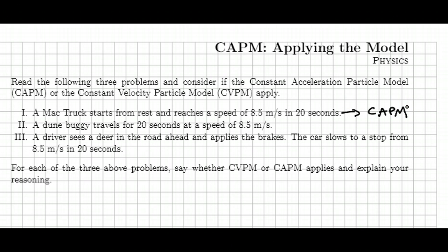In the second one, the dune buggy travels for 20 seconds at a speed of 8.5 meters per second. It sounds like that speed doesn't change, and if the direction also doesn't change, if it's just driving in a straight line, we're definitely CVPM there, constant velocity motion.